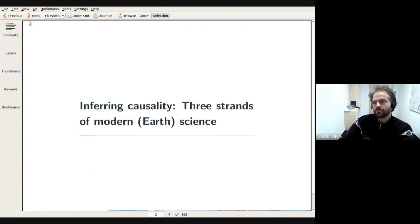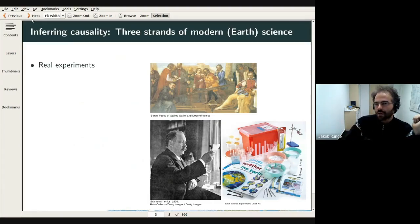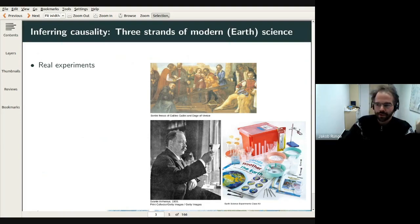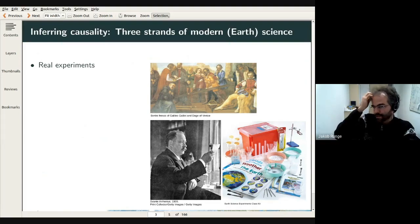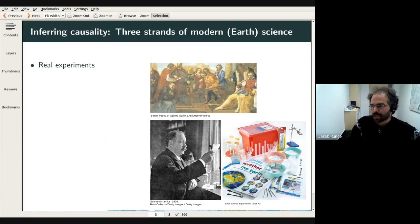Stepping back to look at the problem historically, there are three strands of inferring causality. One is the gold standard: doing real experiments. This is pioneered by Galileo Galilei and gives us knowledge about physical equations. The other person here is Svante Arrhenius, a famous climate scientist. The picture shows how limited it is to do real experiments in the climate system, for reasons of complexity and ethical standards — we shouldn't interfere with the climate system more than we already do in an uncontrolled way, which led to anthropogenic climate change.